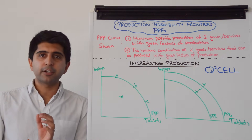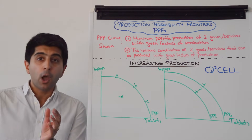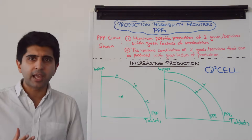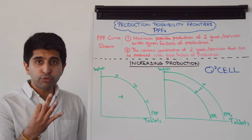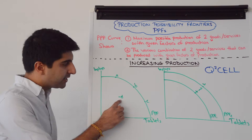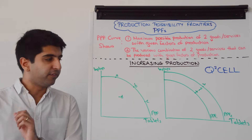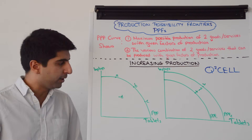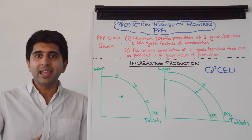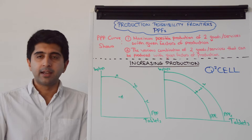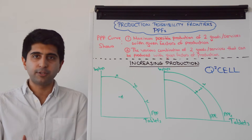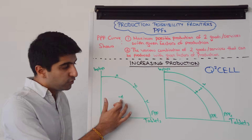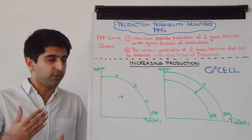How about looking at how to increase production on a PPF? There are numerous ways. First, if a business is operating at point D — a productively inefficient point inside the curve — they are not maximising the use of their factors of production. One thing they could do is use their factors of production better: use up idle labour, use up idle capital, to increase production from point D to point B and therefore produce more tablets.